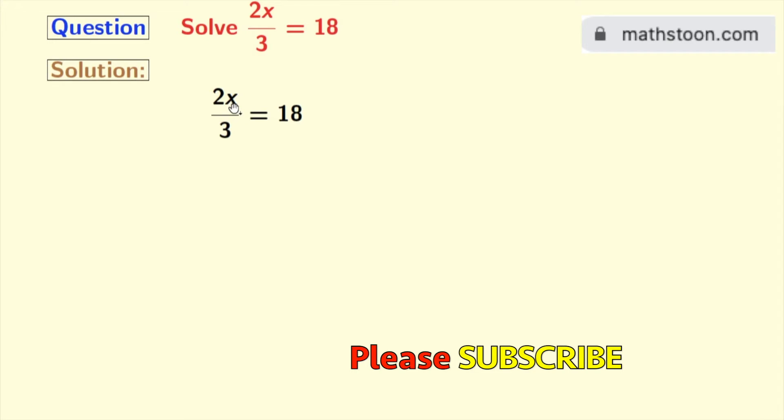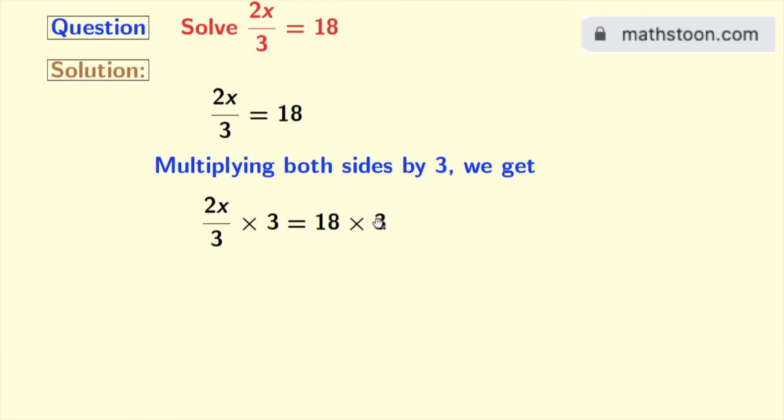Now to do so, we will multiply both sides by 3. Doing that, we get 2x by 3 times 3 is equal to 18 times 3.